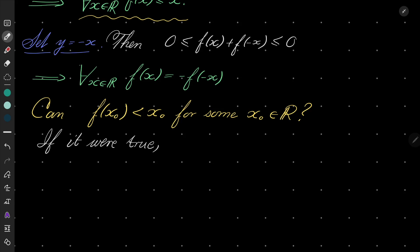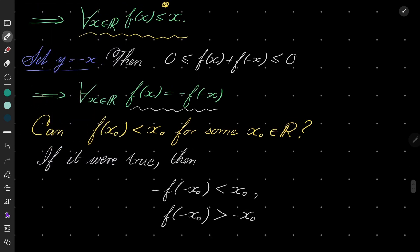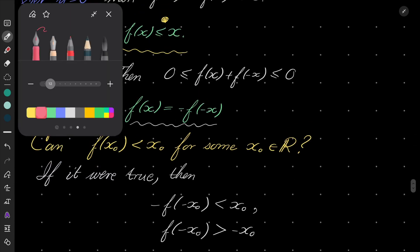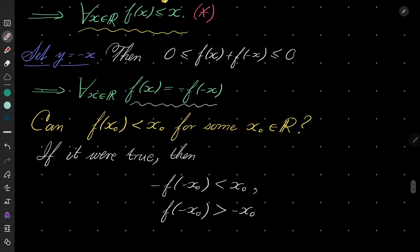We know that f(x₀) can be written as -f(-x₀) < x₀. And if you look closely, this is against, if I call this condition asterisk, this is exactly against the condition asterisk, which is satisfied by every real number x.